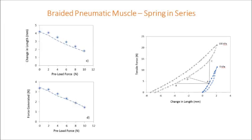Finally, we also tested the pneumatic muscle against a spring in series. The change in length and the force generated are shown in the left hand two figures, and the estimation of the force generated and the actuation stroke are shown in the right hand figure as the line A to D, whose slope is the spring stiffness of the external spring. The dashed lines in the two left hand figures are the values estimated by the graphical method, and you can see they agree very well with the experimental results. By using the force extension curves in the pressurized and unpressurized states, we are able to accurately determine the isotonic, isometric, and spring actuation results.